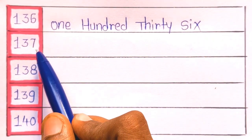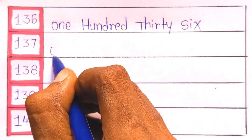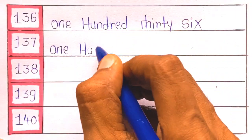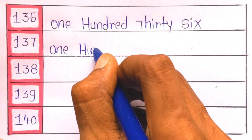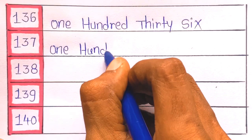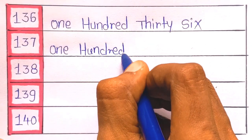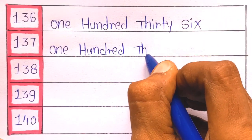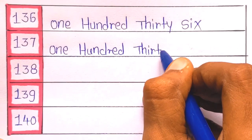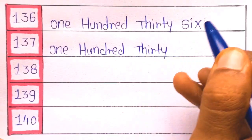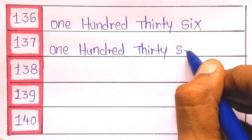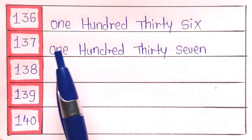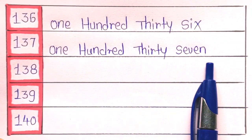Next it's 137. It's 137. O-N-E hundred, H-U-N-D-R-E-D, one hundred thirty, T-H-I-R-T-Y, thirty seven, S-E-V-E-N. 137.